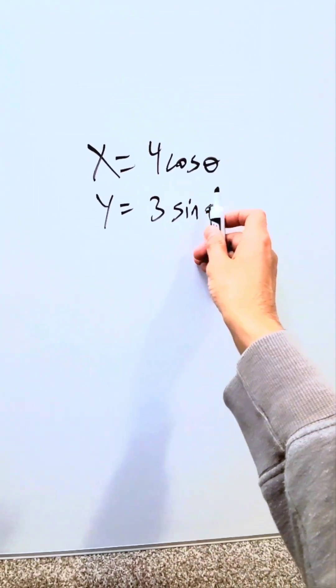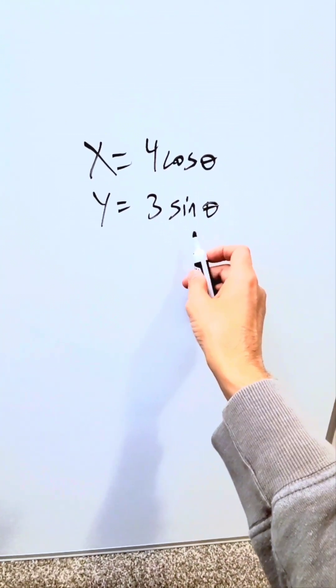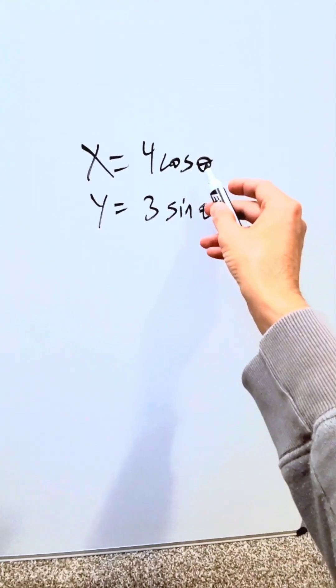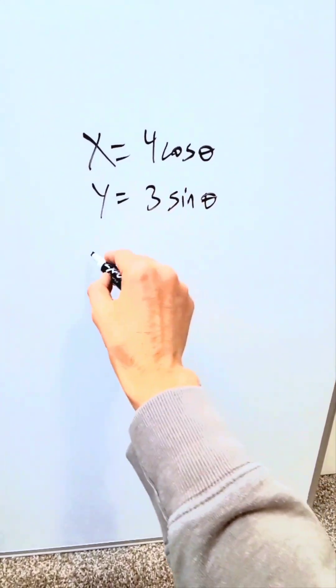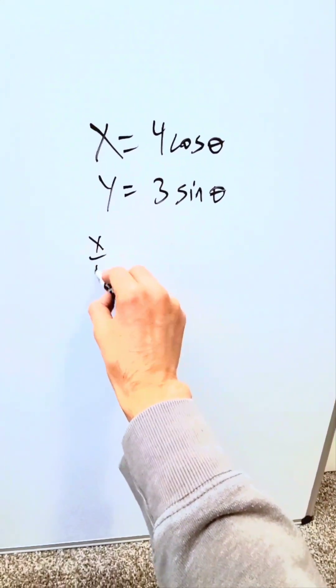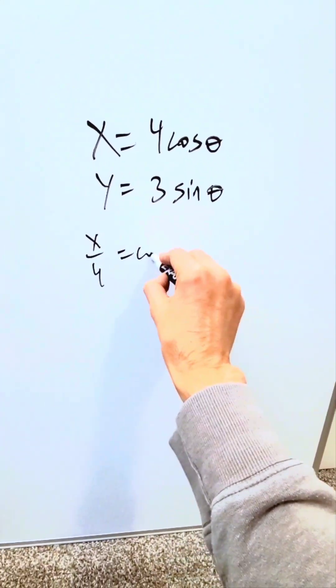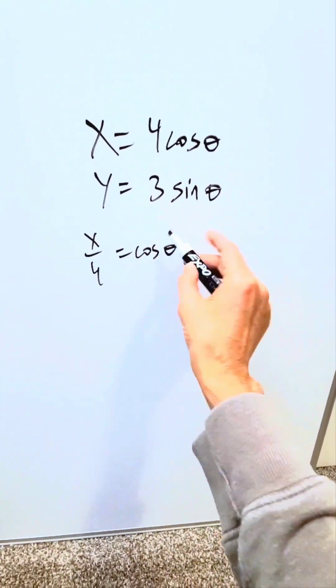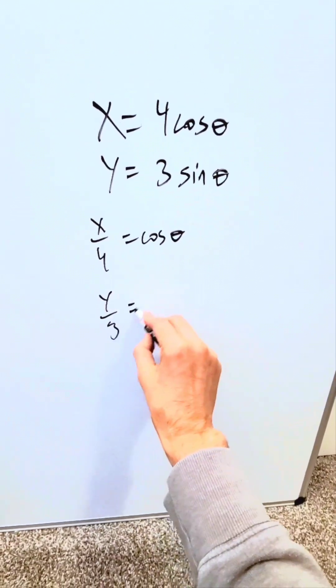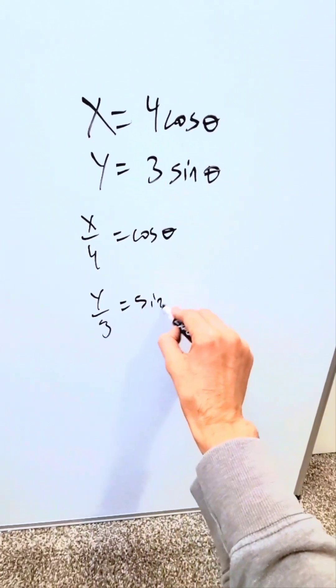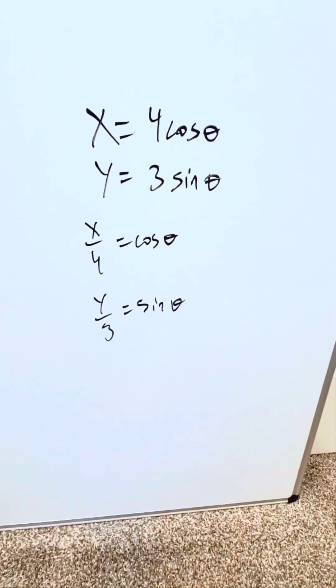Solve in each instance for your trigonometric function. Looking at the first equation, I'll push the 4 to the other side — I'll have x over 4 is equal to cosine theta. In the second, push the 3, and I'll have y over 3 is equal to sine theta.